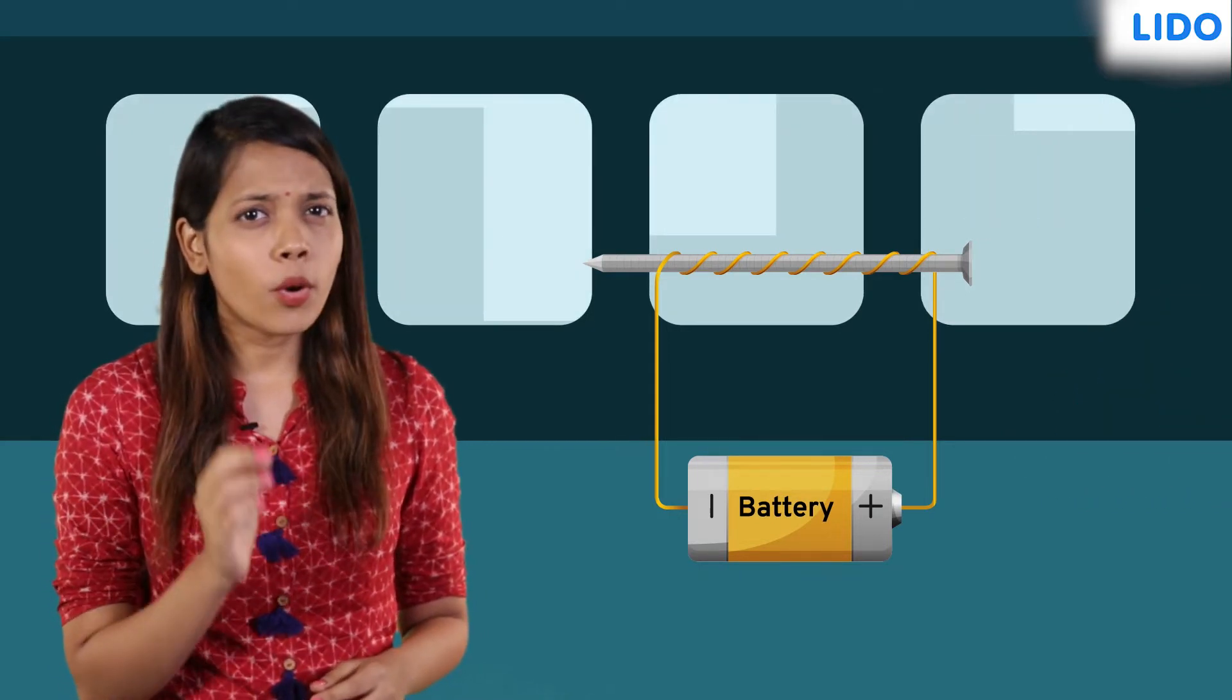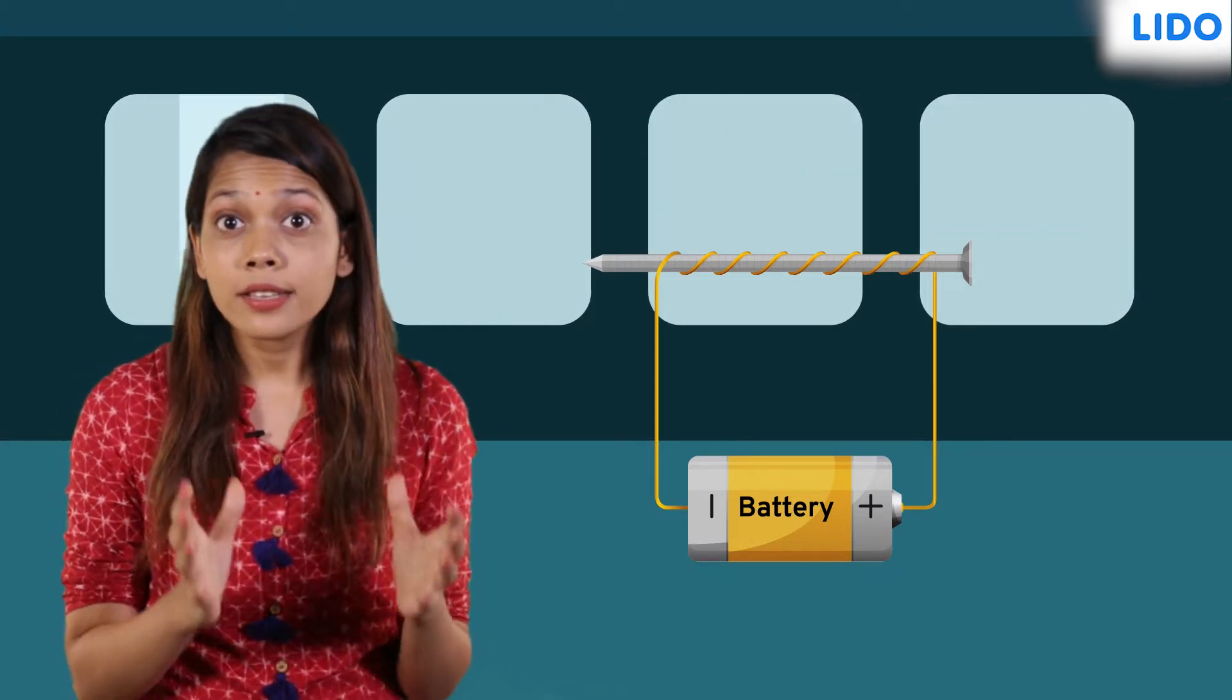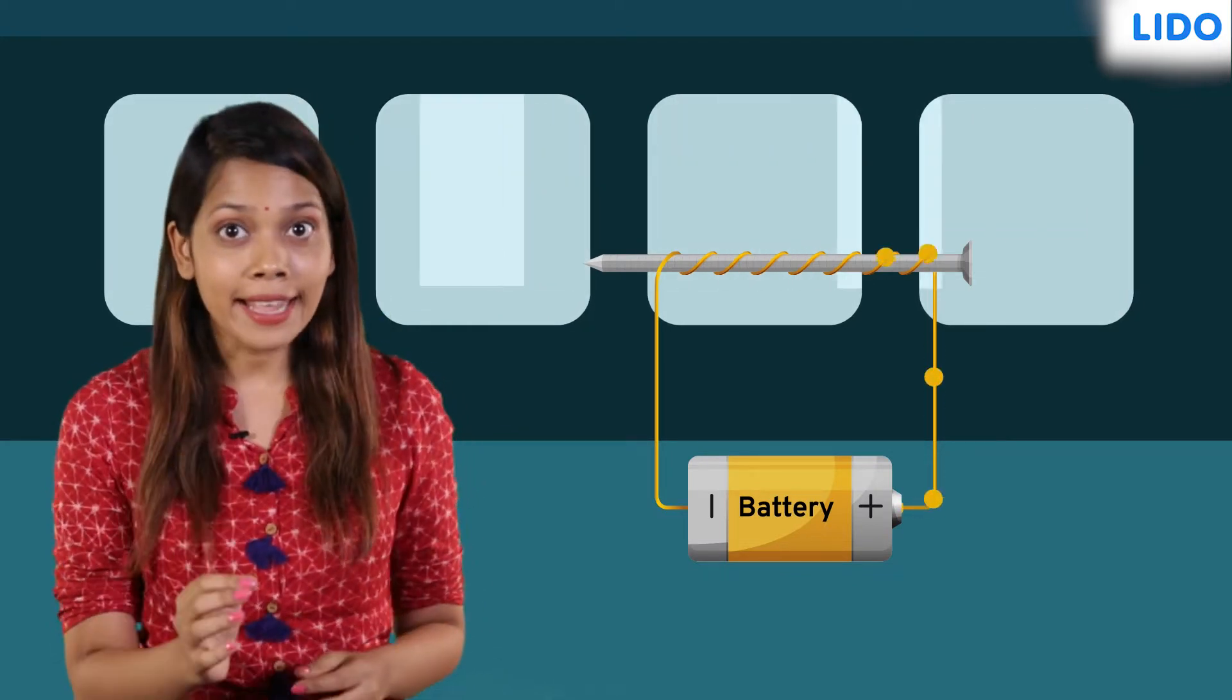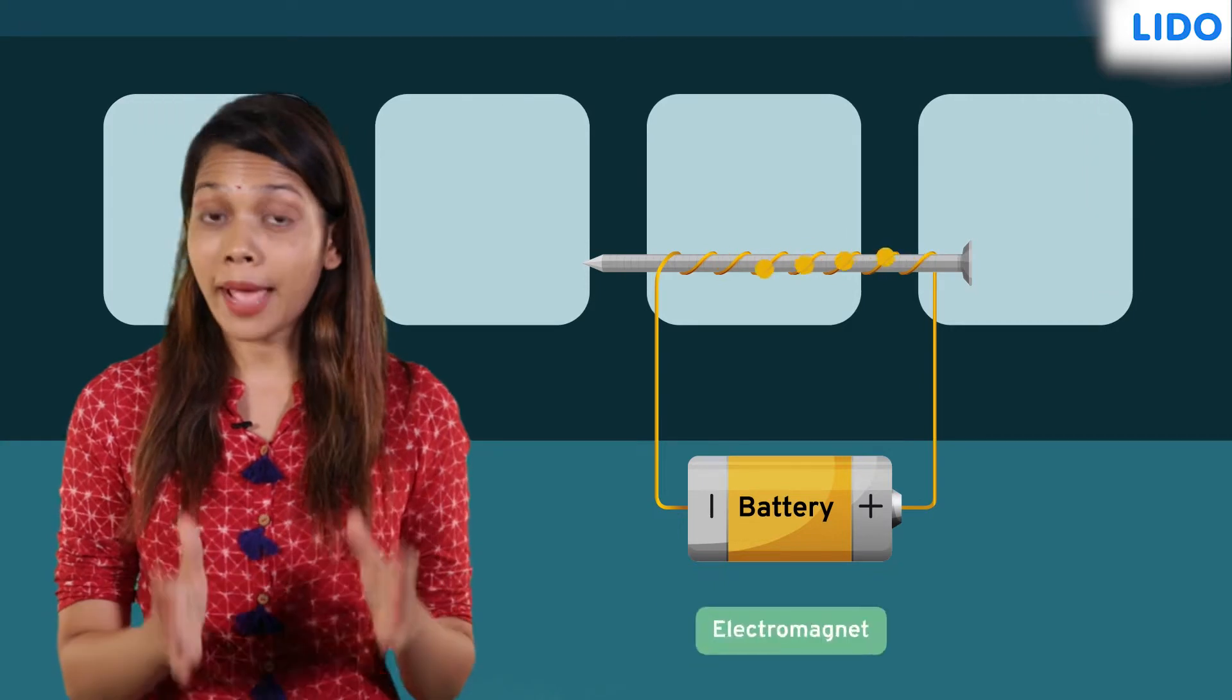Clearly, the coil acquired magnetic properties when the current was flowing through it. And hence, it was called an electromagnet.